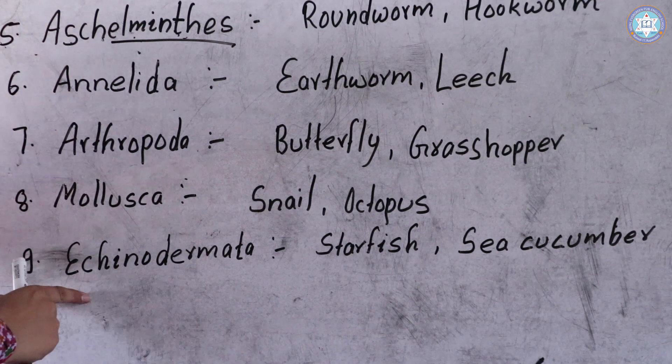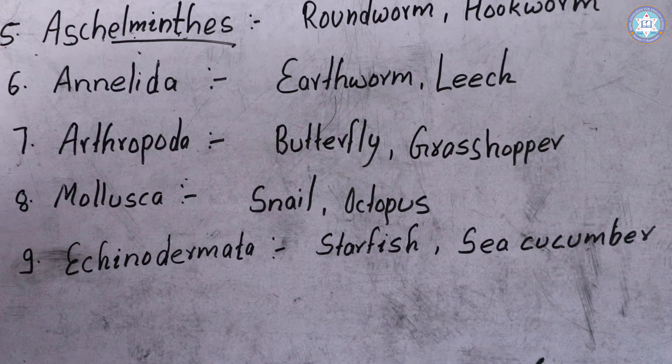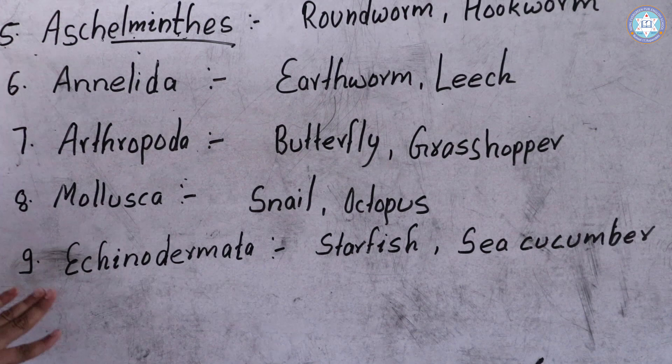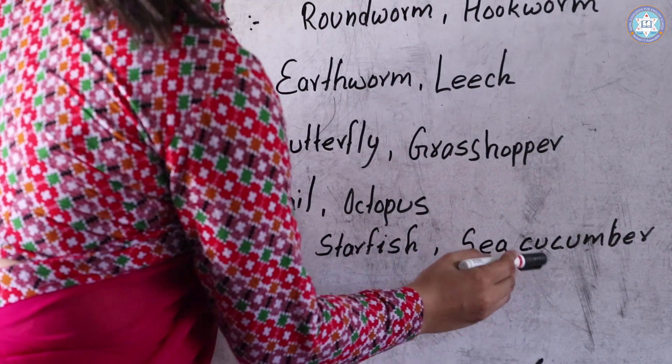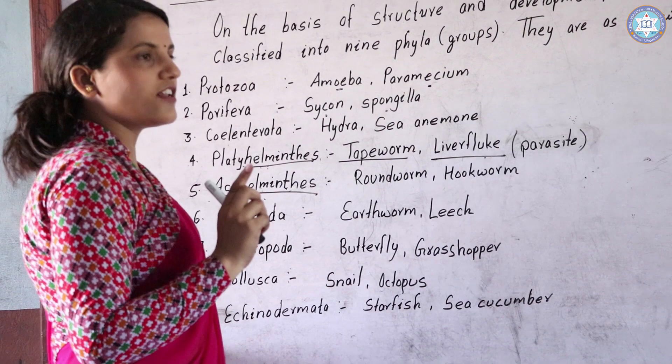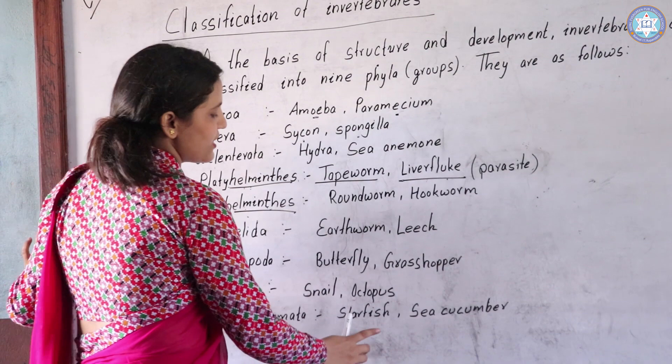Our last phylum is Echinodermata. Examples are Starfish and Sea Cucumber. They are mainly known as marine animals — they are sea animals found in salty water, not fresh water. These are the examples of Echinodermata.